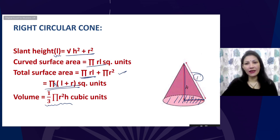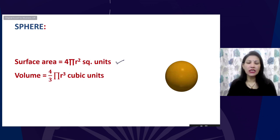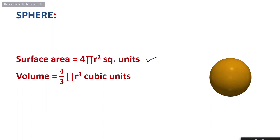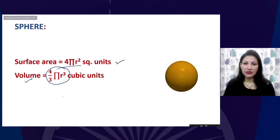For a sphere, the curved surface area and total surface area are the same — 4πr² — because there is no flat surface. The volume of a sphere is (4/3)πr³ cubic units.